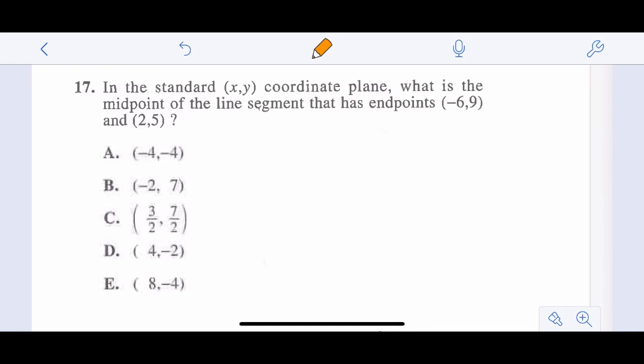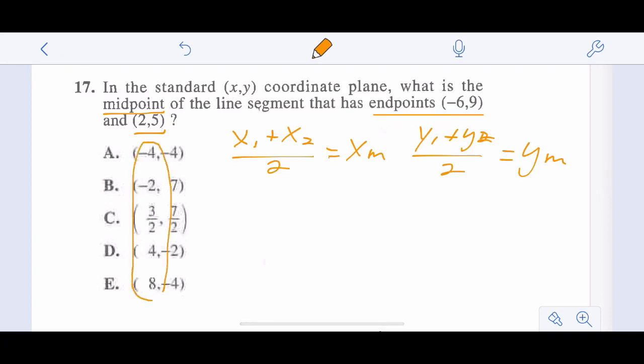In the standard x-y coordinate plane, what is the midpoint of the line segment that has endpoints negative 6, 9 and 2, 5? So our midpoint formula is x1 plus x2 divided by 2 equals the midpoint of x, and the same thing for y. Y coordinate 1 plus y coordinate 2 divided by 2 equals the midpoint of y. If we look at our answers, we see that none of the x's are the same. They're all different. So we don't have to do x and y, we just do one or the other. I'm just going to do the x coordinates. We have negative 6 plus 2 divided by 2 equals negative 4 divided by 2 equals negative 2. And the only one that has negative 2 is choice B.